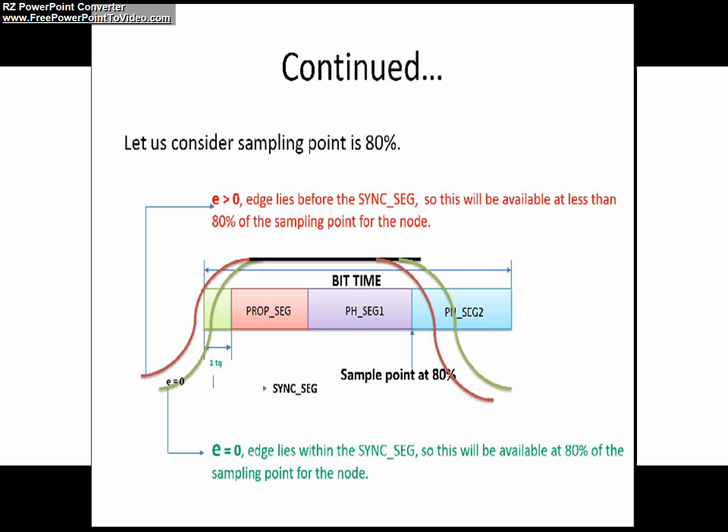Now you may ask how to compensate this edge phase error in a CAN network. How the node or receiver will compensate this edge phase error? By lengthening the phase buffer segment one. By increasing this phase buffer segment one, the edge phase error E greater than zero will be corrected by a receiver. Again you may ask how much time quanta it has to lengthen or how it will determine how much it has to lengthen. Very simple. That depends on the resynchronization jump width or synchronization jump width.